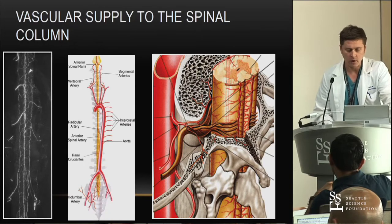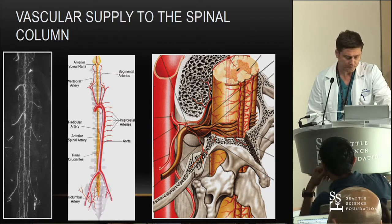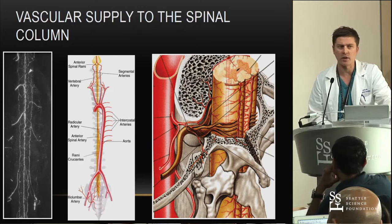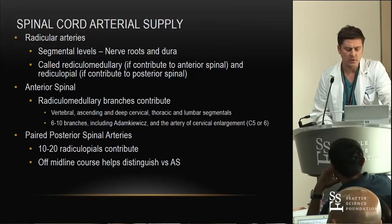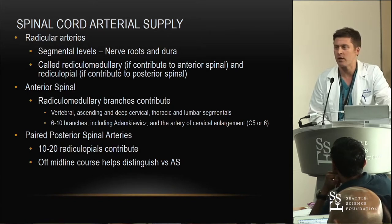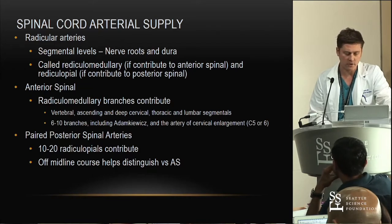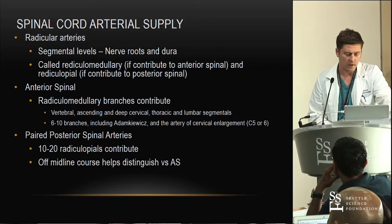In terms of the vascular supply to the spinal column, we'll focus on some basic anatomy: the segmental arteries in the thoracic and lumbar spine, the vertebral arteries in the neck, and the iliolumbar artery — that's important, there's a case of an AVM I'll show later off that vessel. The radicular medullary branches go to the anterior spinal artery, which is a single vessel. The radicular pial branches are paired vessels to the posterior aspect of the spinal cord. The anterior spinal gets contributions from the vertebral, ascending and deep cervical arteries, thoracic and lumbar segmental arteries, the artery of Adamkiewicz, and the artery of cervical enlargement, usually found at C5-C6.